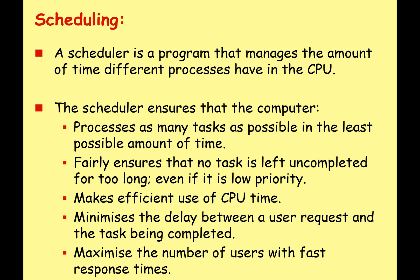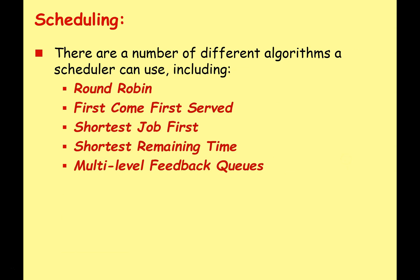A scheduler is a program that manages the amount of time different processes have in the CPU. You can imagine all these different processes wanting as much CPU time as possible — you need some kind of door guard or bouncer to make sure that only the most important processes get access straight away, and less important ones have to wait. The scheduler ensures the computer processes as many tasks as possible in the least amount of time, fairly ensures no task is left uncompleted for too long, makes efficient use of CPU time, minimizes delay between a user request and task completion, and maximizes the number of users with fast response times.